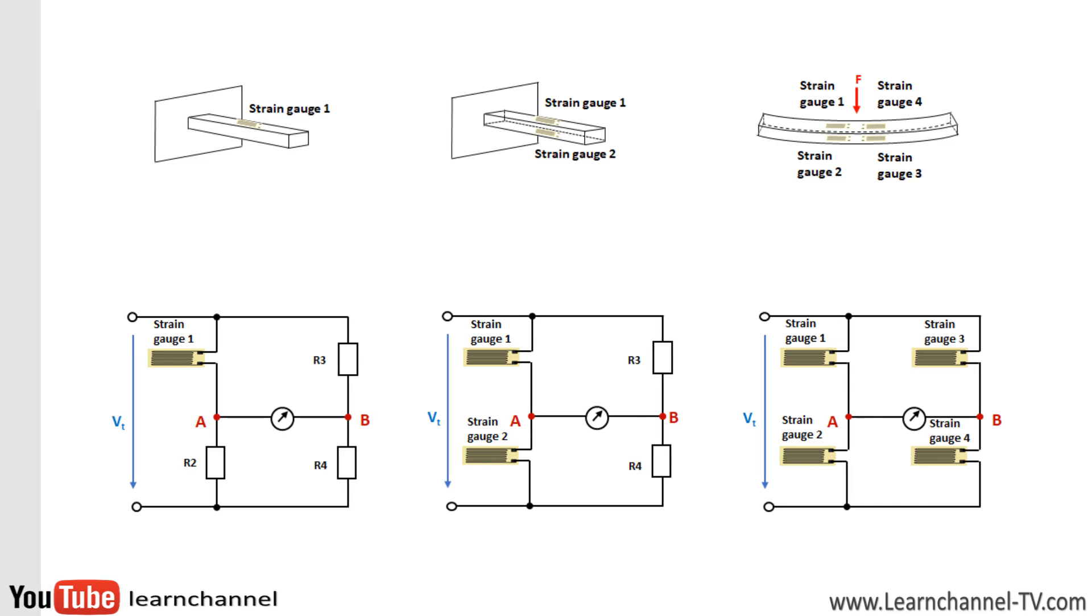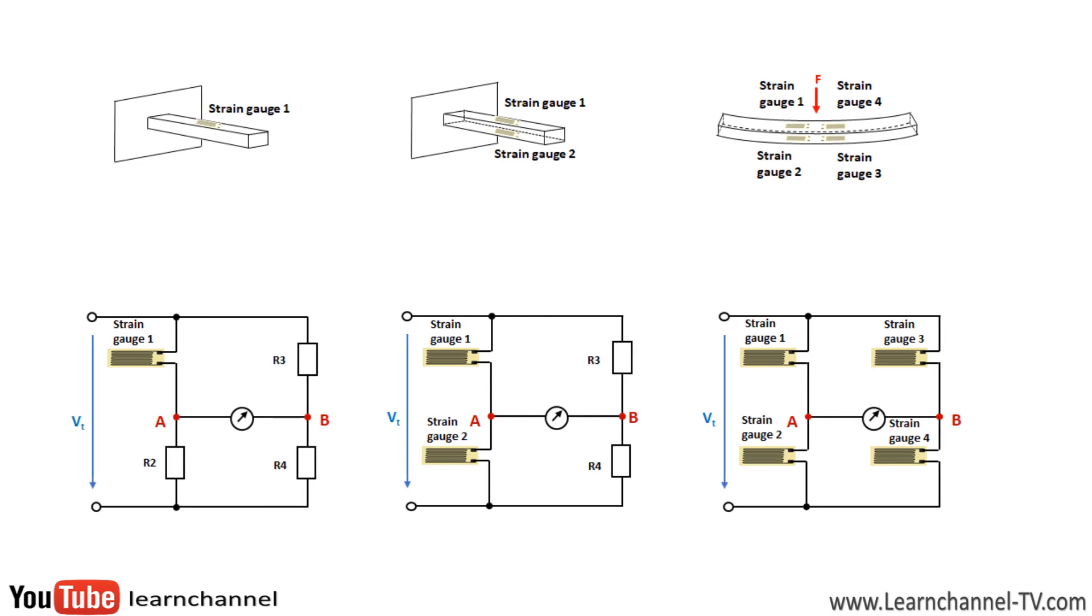Usually, one, two, or four strain gauges are installed in a Wheatstone bridge. The names quarter, half, and full bridge result from this. The nominal resistance of all strain gauges is usually the same. Typical values in the unloaded state are, for example, 120, 350, 700, or 1,000 ohms.